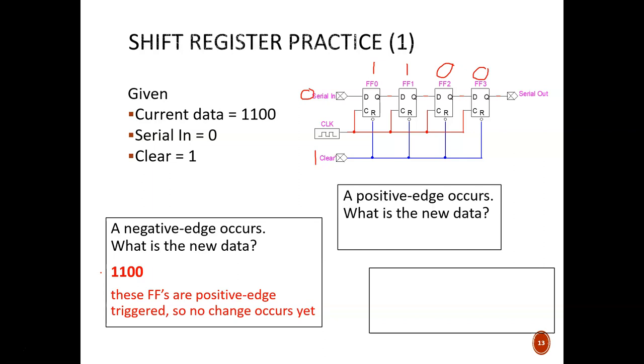Second question: A positive edge occurs. What is the new data? The answer is 0110. This leading one moves down to the next flip-flop. This next one does the same. This zero does the same. Where does the new leading zero come from? It was brought in through the serial in port.